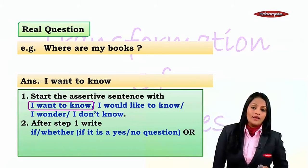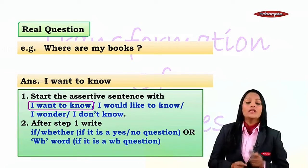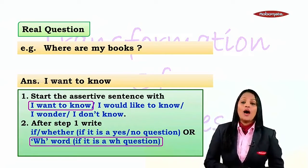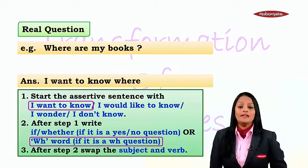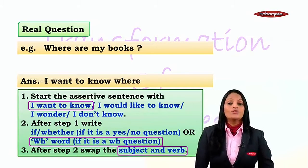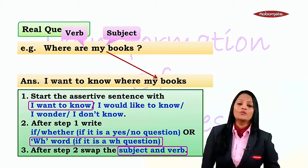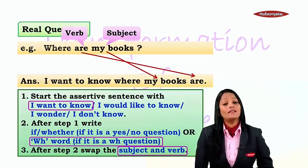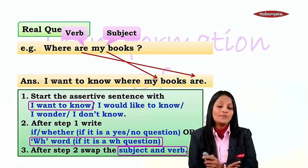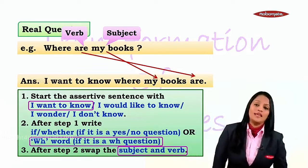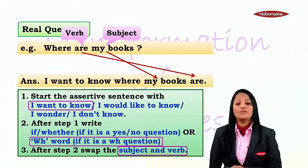After step one, write 'if' or 'whether' if it is a yes/no question, or write the WH word if it is a WH question. In this case it is a WH question — 'Where are my books?' — so we write the same WH word 'where.' Then we swap the subject and verb: 'are my books' — 'my books' is the subject and 'are' is the verb. We swap it: first the subject 'my books,' then the verb 'are.' So the assertive sentence is: 'I want to know where my books are.'